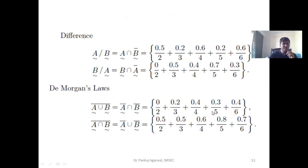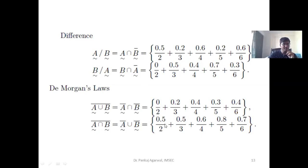The difference operation is formulated as A slash B, which is nothing but A intersection of B complement. De Morgan's Law states that the complement of A union B is equal to A complement intersection B complement. By applying this formula, you can very easily find out how De Morgan's Laws can be implemented.